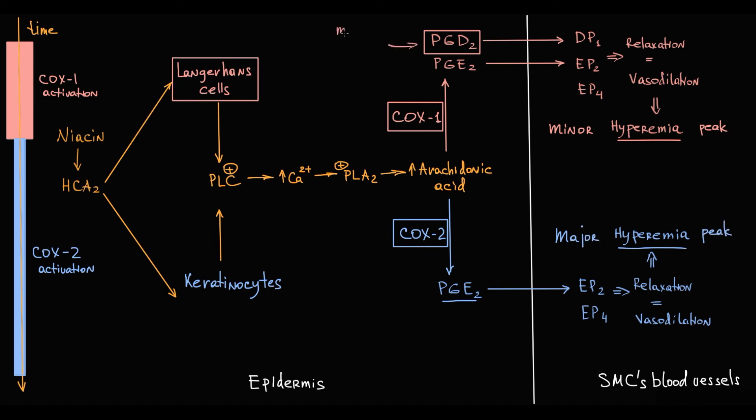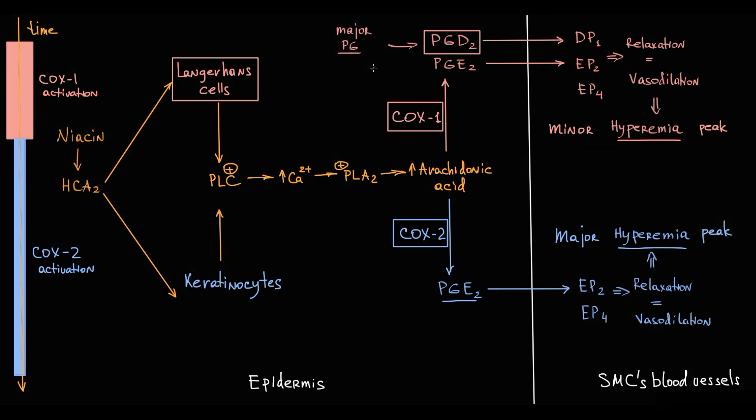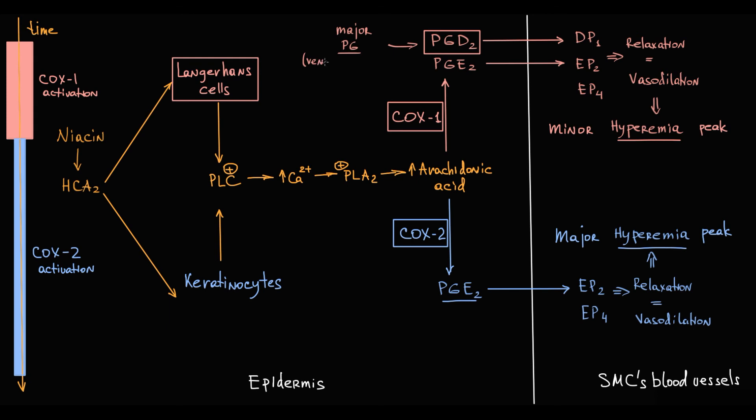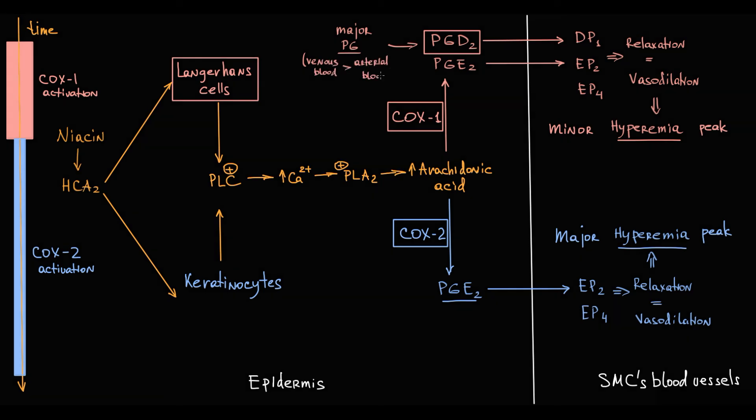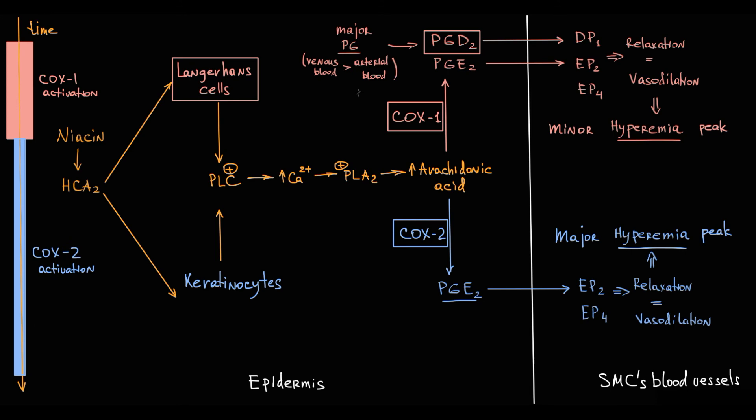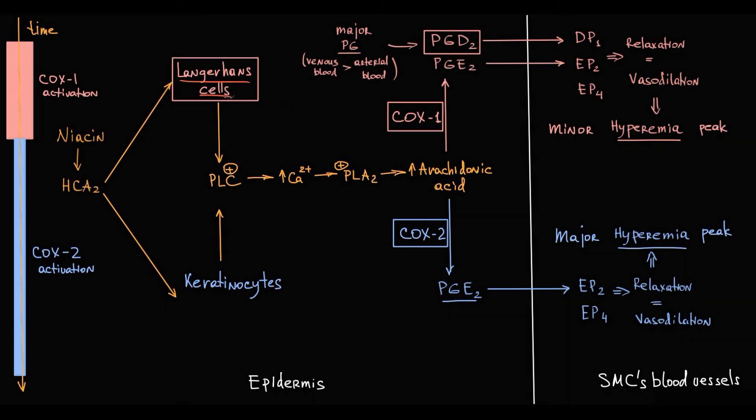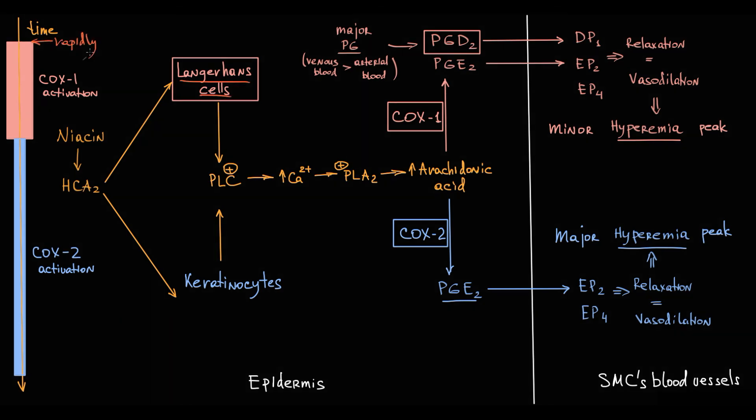Prostaglandin D2 is the major prostaglandin released after injection of niacin. Also interesting is that prostaglandin D2 levels in the venous blood and dermal blood vessels are substantially higher than levels in arterial blood. We see that Langerhans cells become activated very rapidly and generate tremendous amounts of prostaglandin D2.